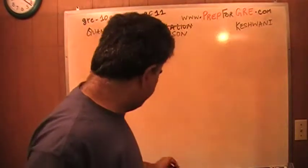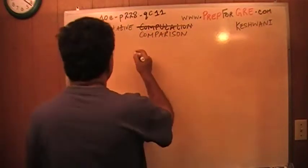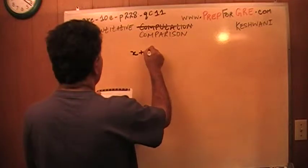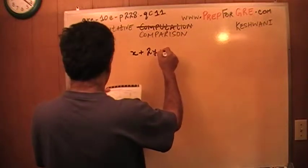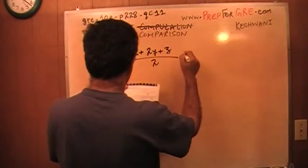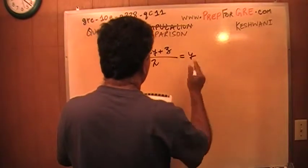We are given this information: x plus 2y plus z over 2 equals y.